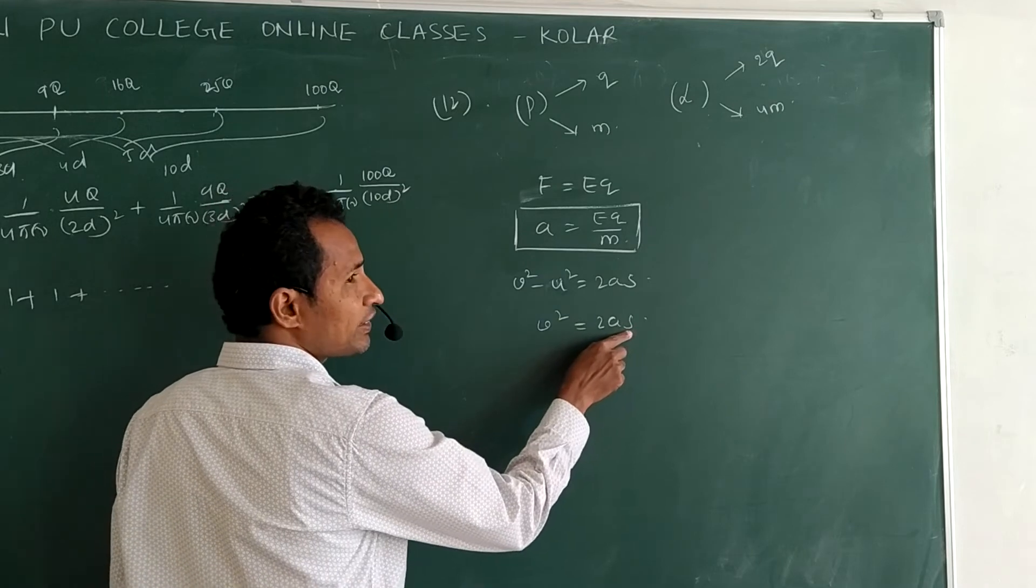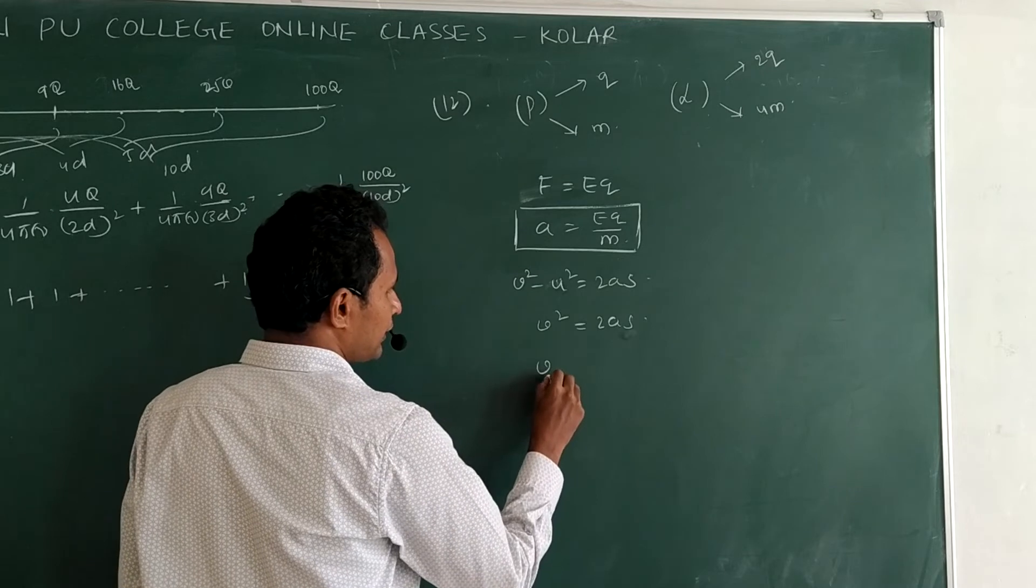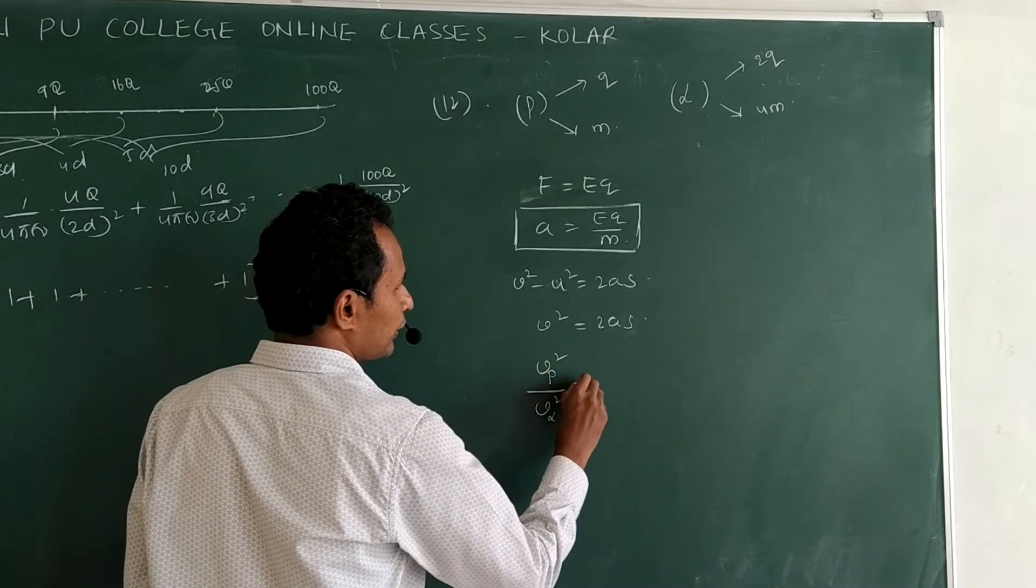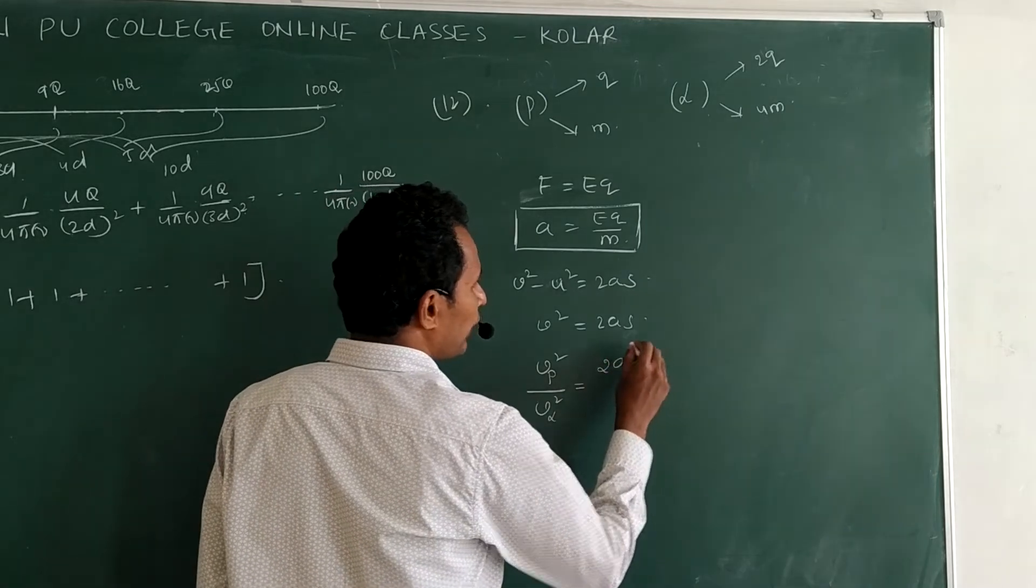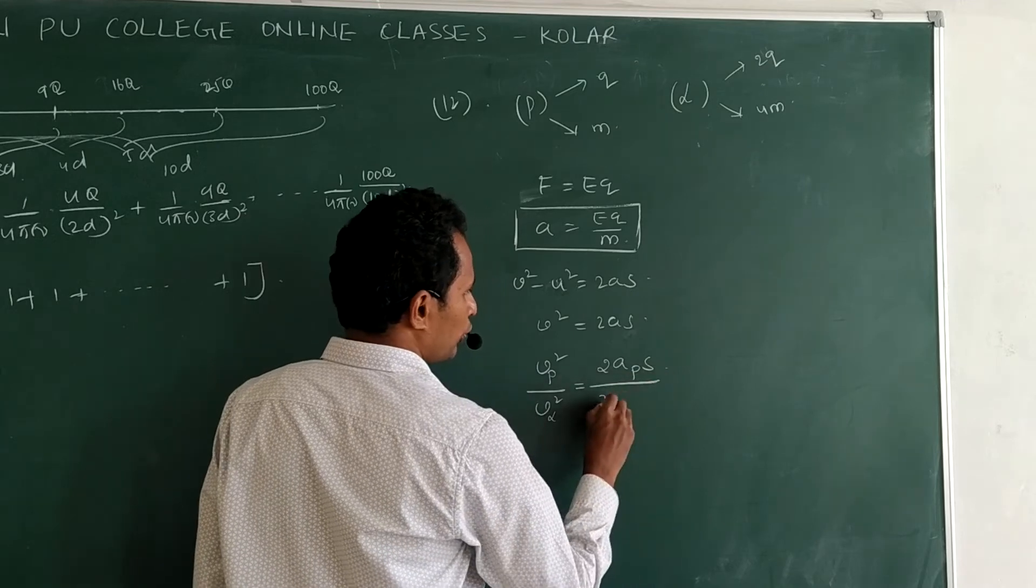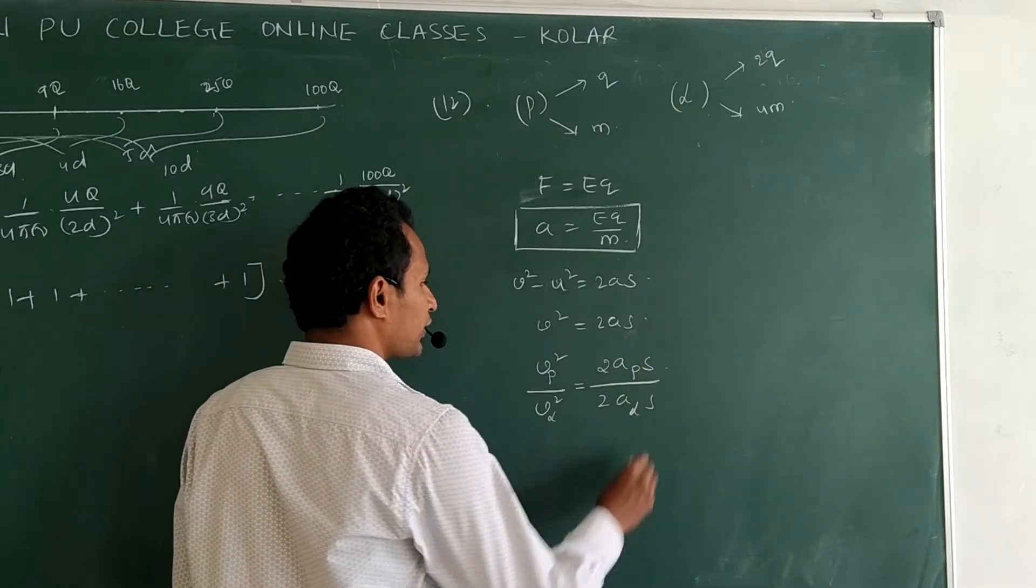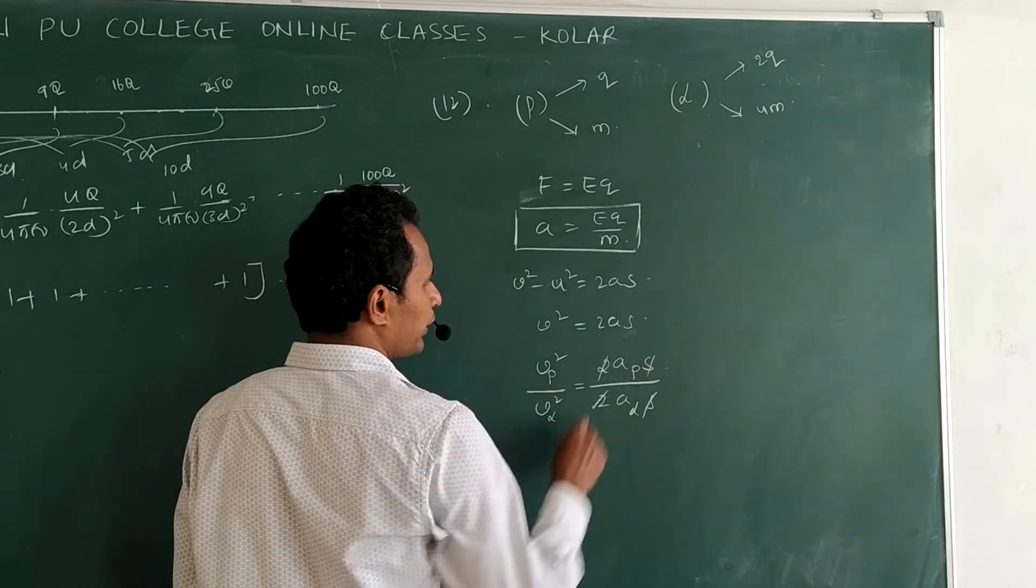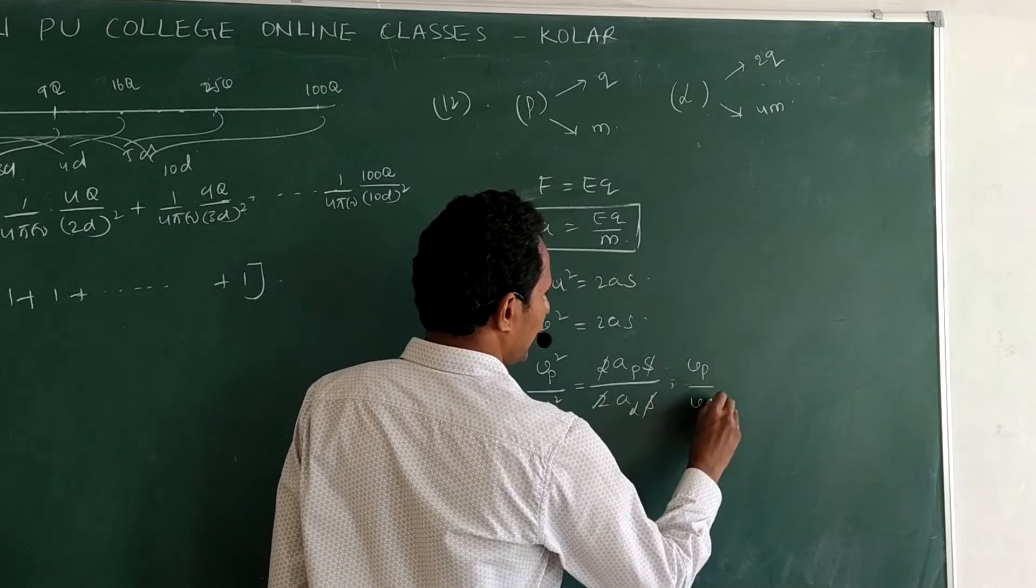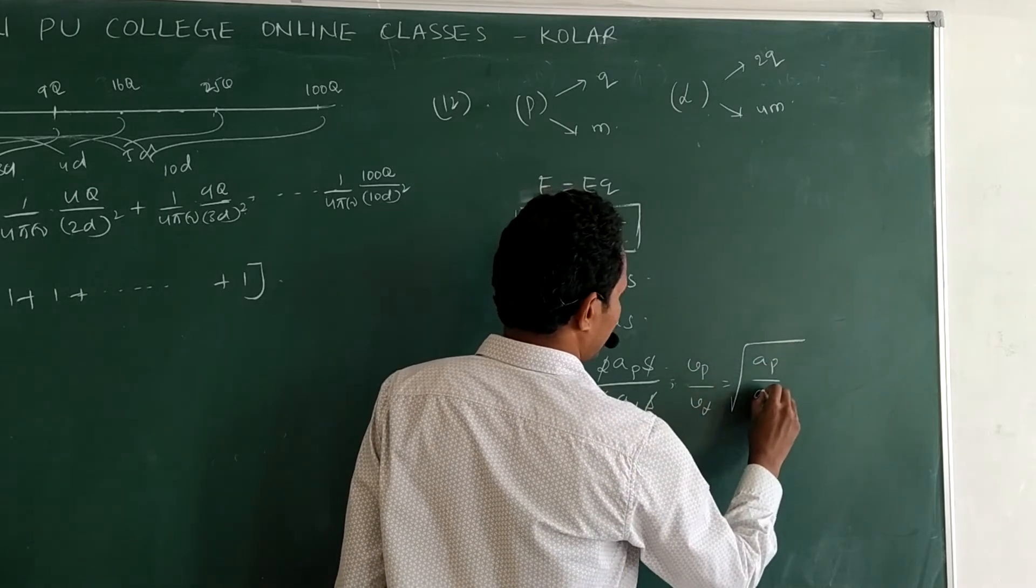Yes. Displacement S is same in both the cases. Right. So this I can write velocity of proton square by velocity of alpha is equal to 2 into acceleration in proton, displacement is remained same, 2 into acceleration in alpha, displacement is S. S cancel, 2 cancel.